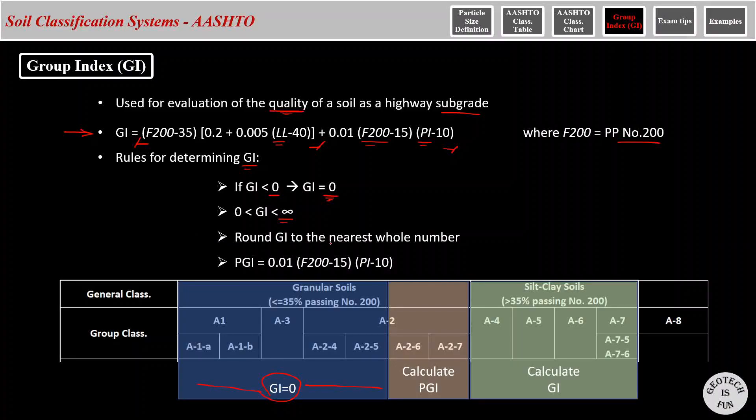GI should be rounded to the nearest whole number. And finally, for calculating GI for A-2-6 and A-2-7, PGI equation, which is the second portion of the equation, should be used. And for silty and clay material, the GI equation shall be used to calculate GI.